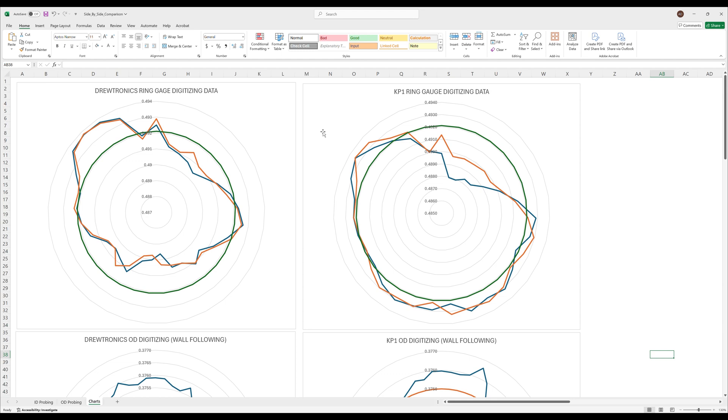Let's take a look at what exactly is going on here and let's focus on the ring gauge digitizing data first. So this is the ring gauge digitizing data for the Drutronics and this is the ring gauge data for the KP1 probe. Just to sort of explain what is going on here is both of the green rings are like the theoretical perfect circles and the blue and the orange both on the KP1 and on this Drutronics ring these are the actual registered probe hits. So if everything were perfect all the blue and the orange and the green should be perfectly lined up on both plots but it's not so we can take a look at the error and what exactly is going on. And it does appear that the KP1 does a better job of tracking the ring than the Drutronics probe does.